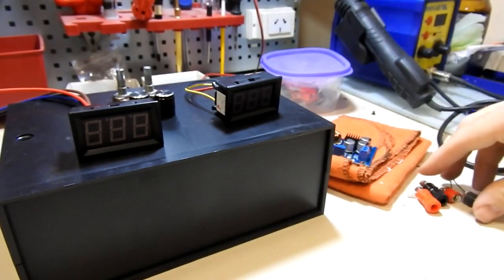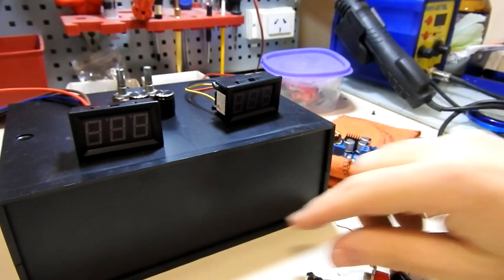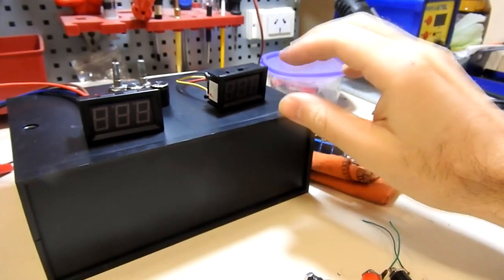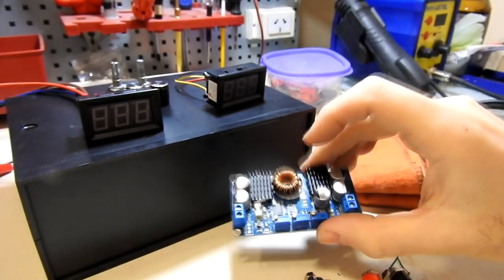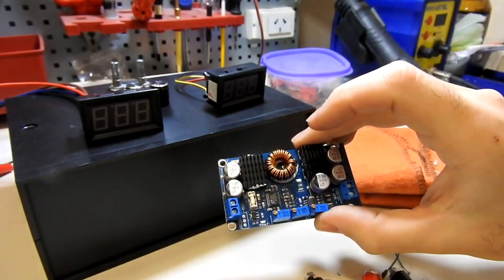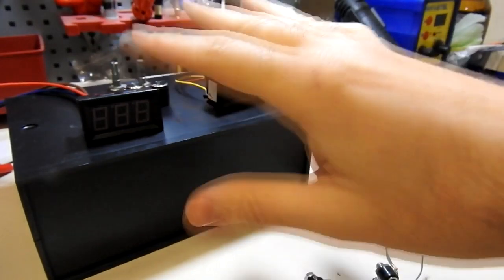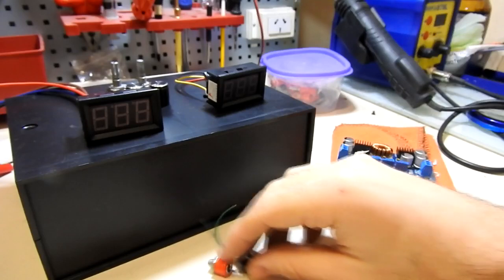Tenemos también algo que va a ir acá en el frente del equipo. Primero vamos a presentar, ante todo, el case. El case va a tener el transformador adentro, va a tener el step-up, step-down. Y va a tener lo que vamos a ver ahora a continuación, que son, por ejemplo, estos conectores banana.